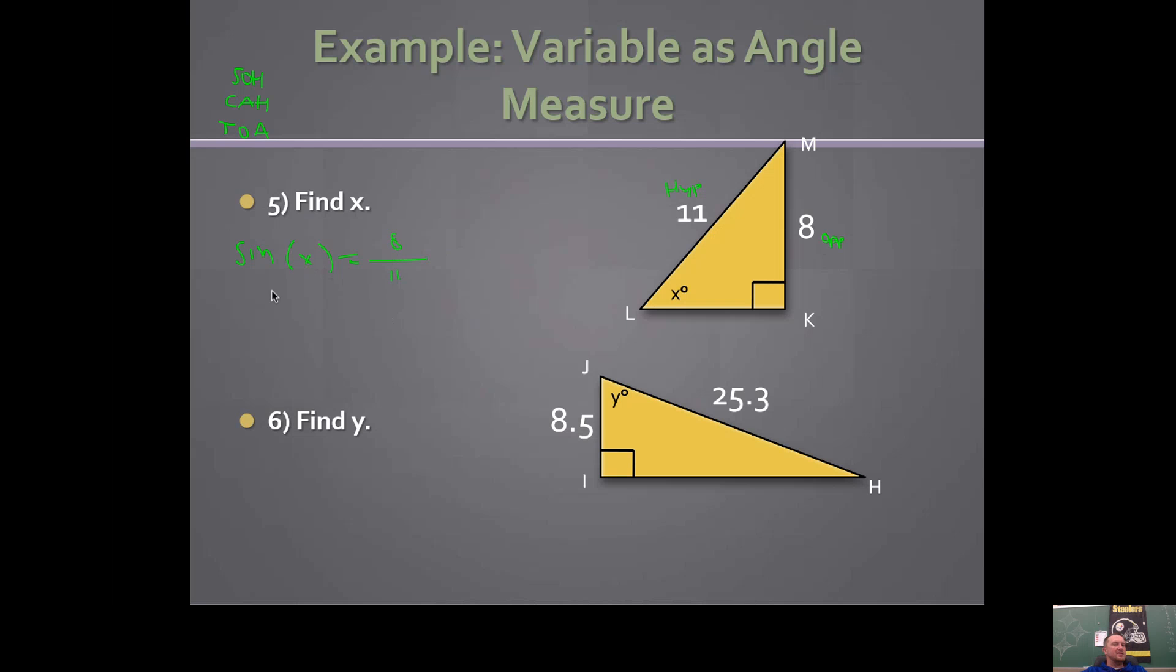You get x by itself the same way you did with tangent. To get x alone, you need to do the inverse sine of both sides. So we're doing inverse sine of 8 elevenths, and this is going to give you an angle measure.